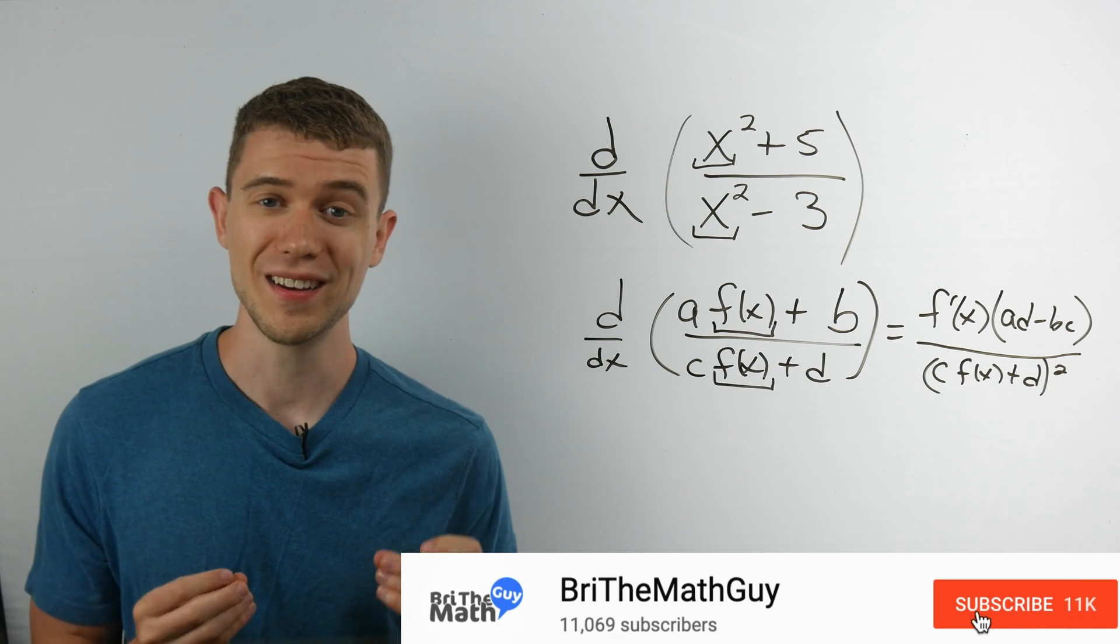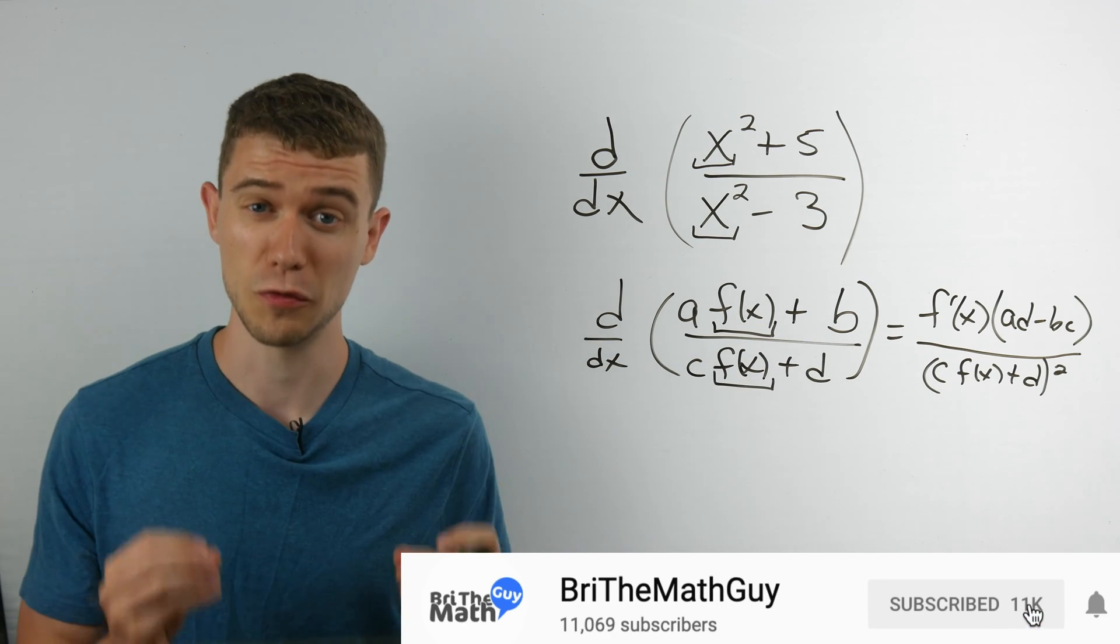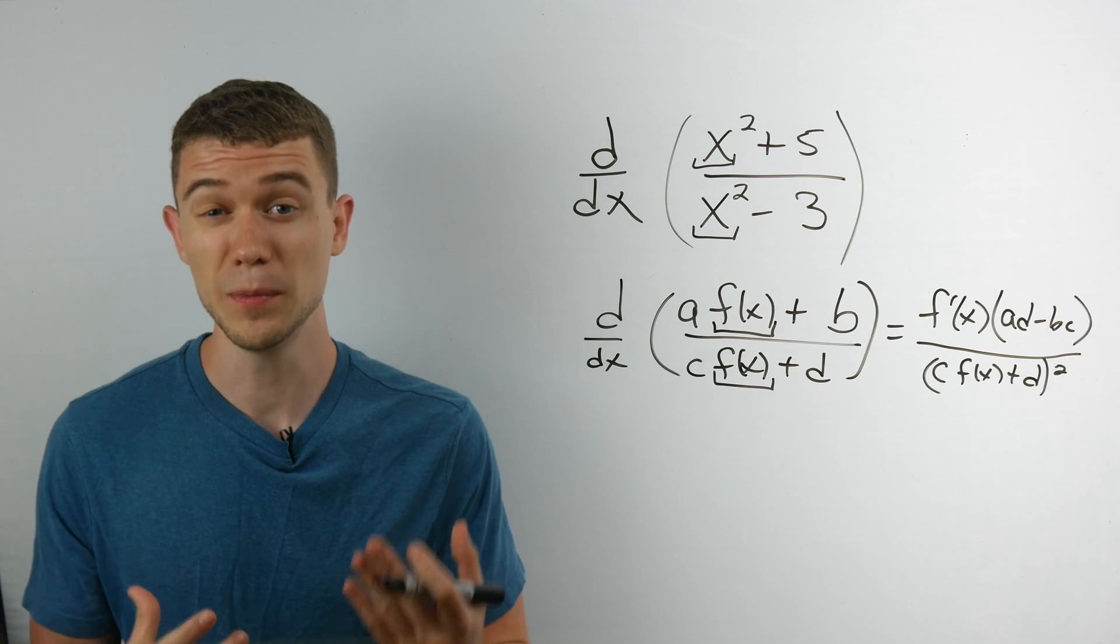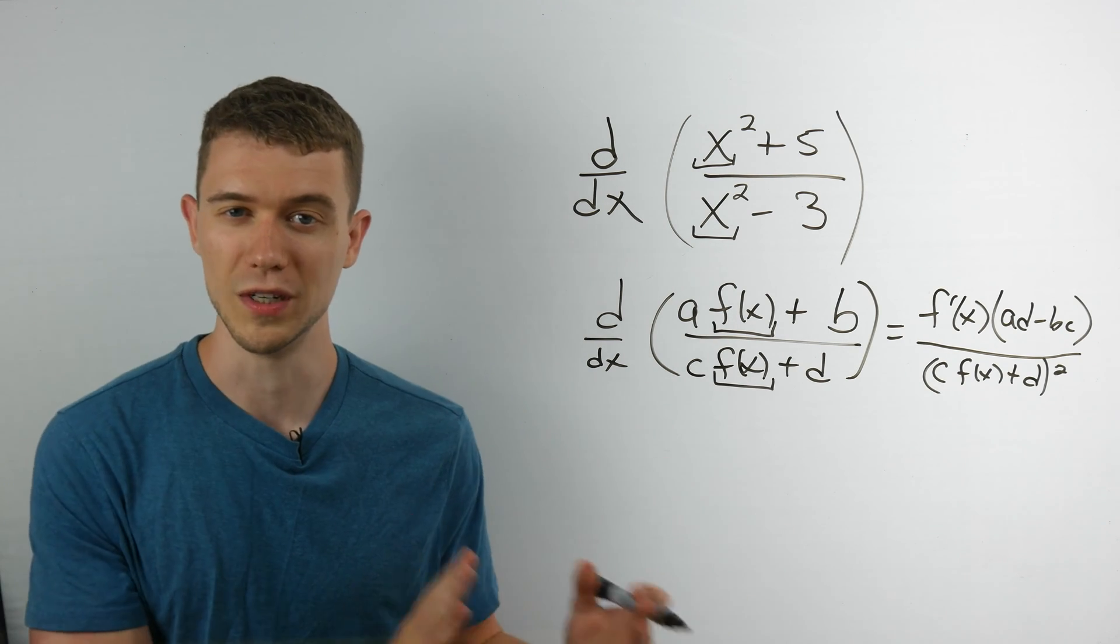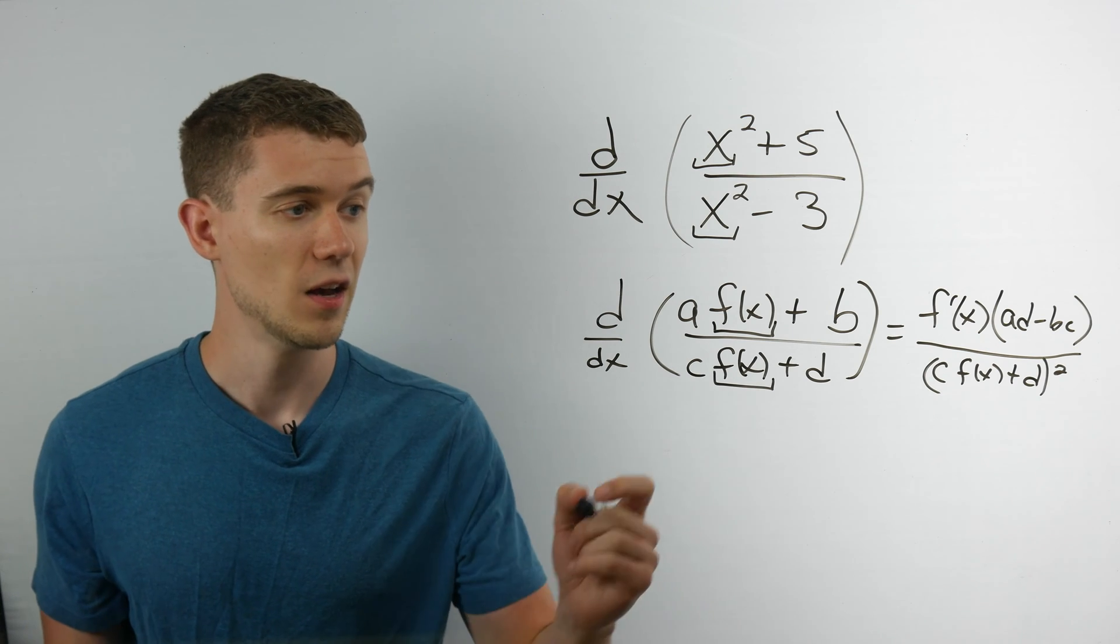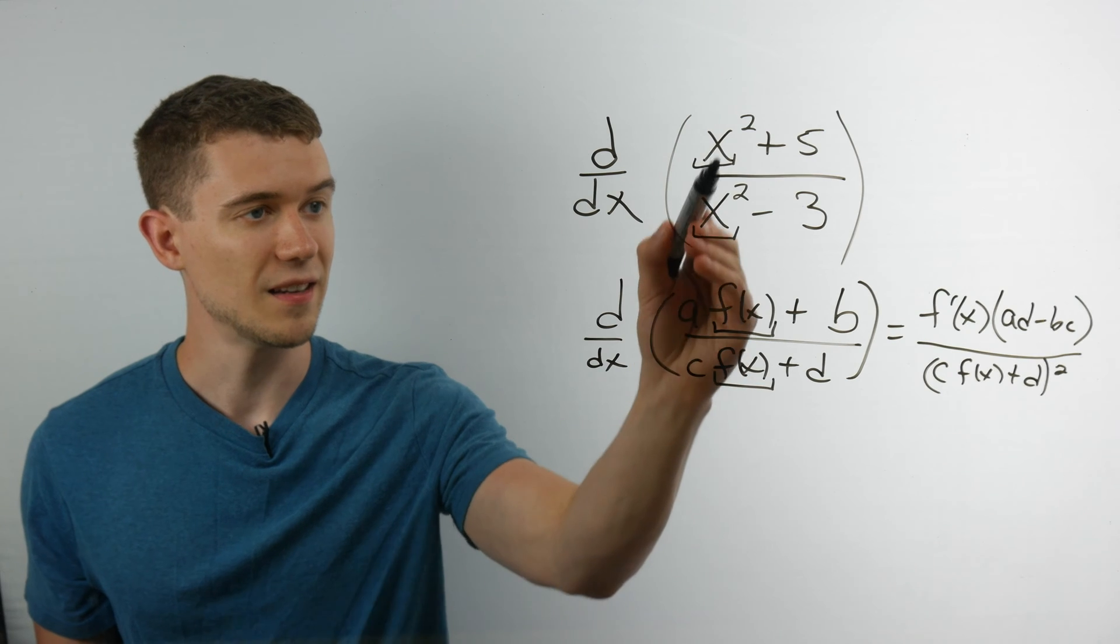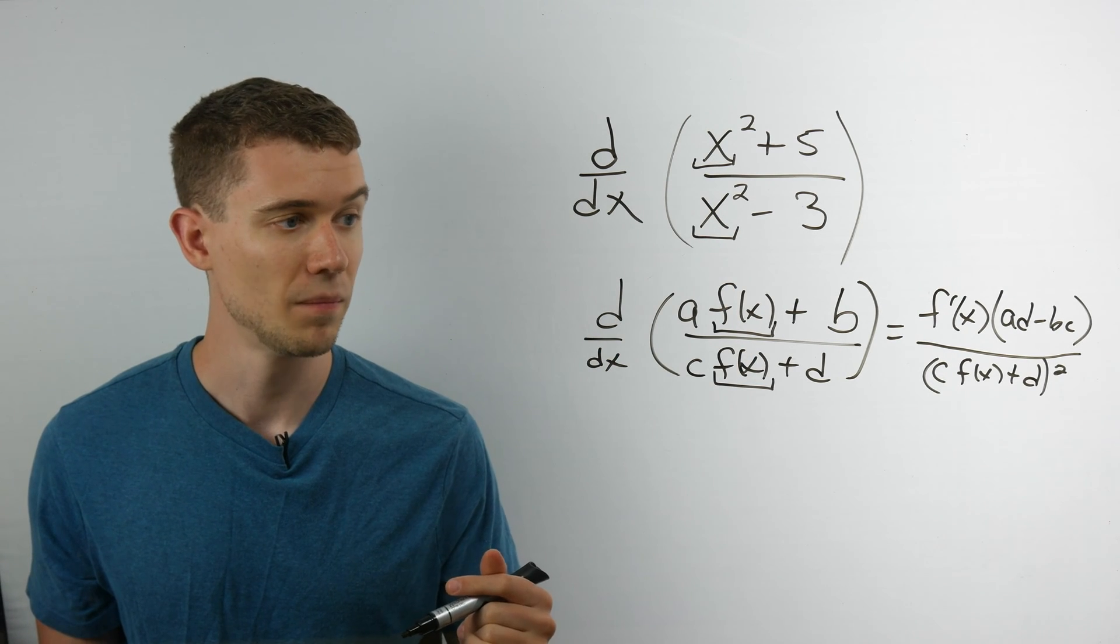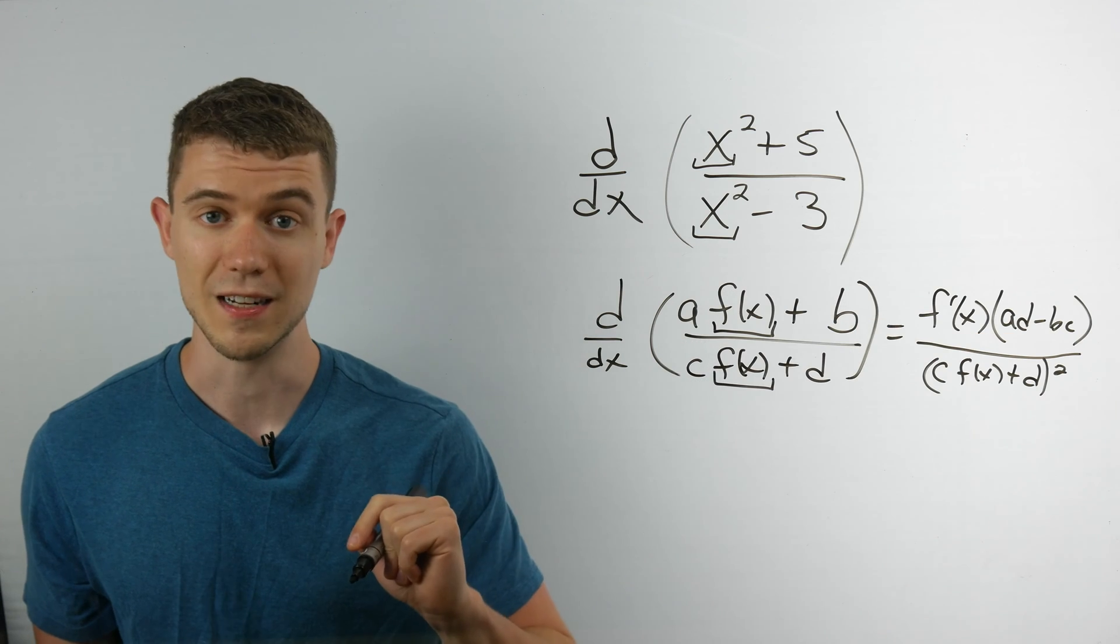So using this trick and just doing a little bit of mental arithmetic, I was able to take the derivative of this function and simplify it in just one line. But let's go through it in two steps using this trick and then simplifying. So I noticed that these first two things match, that allows me to use the trick, and then I plug it into this formula.